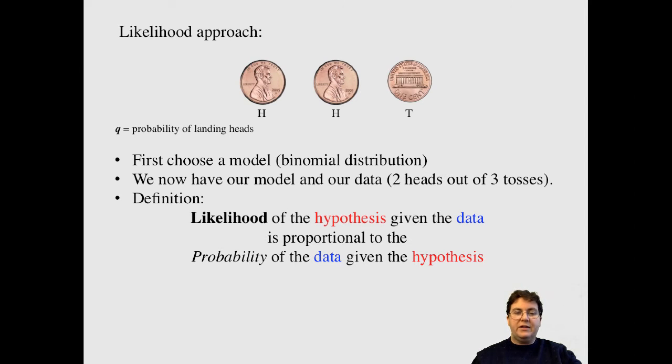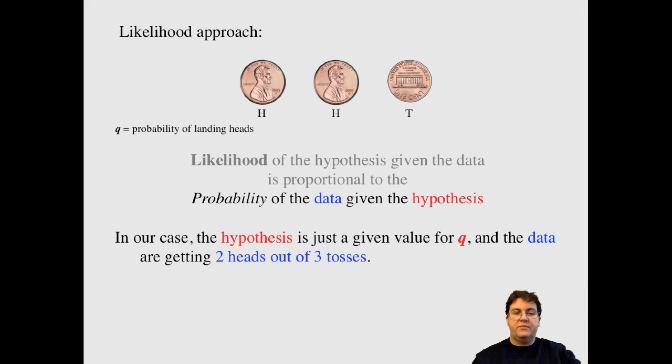So likelihood, the hypothesis given the data, is proportional to the probability of the hypothesis, of the data given the hypothesis. That's just the definition of likelihood. Let's unpack it a little bit. So in our case, the hypothesis is just a value for q. So I hypothesize that q is 0.4 or 0.8 or 0.5. And the data are just getting two heads out of three tosses. I'm going to get the probability of those data given the hypothesis.